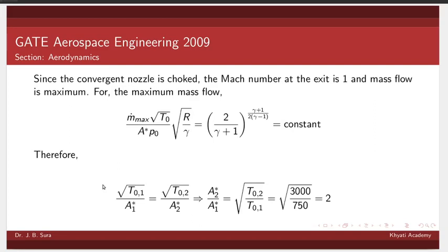This question is related to something called mass flow parameter. We will try to solve this in two different ways. Since the convergent nozzle is choked, the mach number at the exit will be 1 and mass flow rate is maximum.